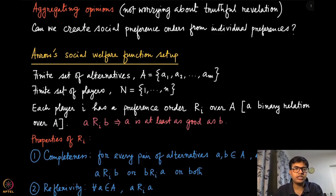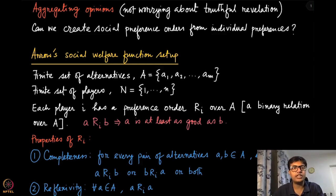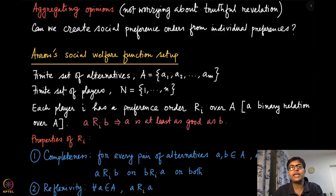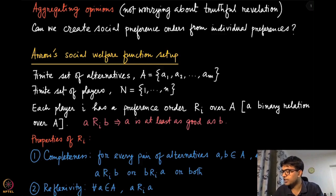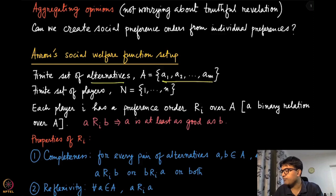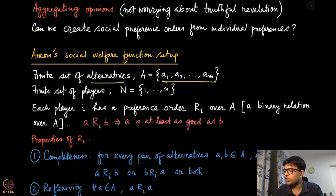Arrow's setup is essentially named after Kenneth Joseph Arrow, who gave these results. In this setup, we have a finite set of alternatives — the outcomes that we can pick — and let us say there are m possible outcomes here. We also have a finite set of n players.